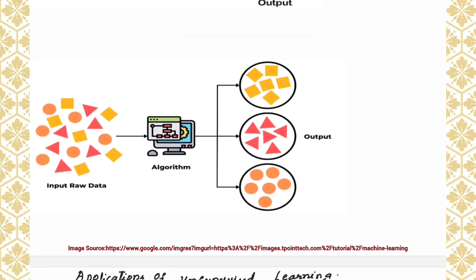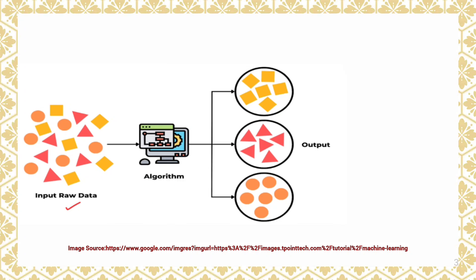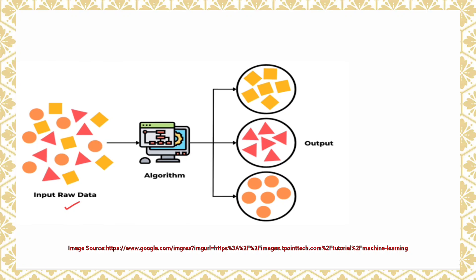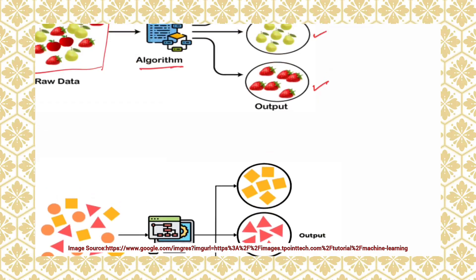Here is another example. The input raw data consists of different symbols — square, triangle, and circle. The algorithm gets trained with this unlabeled data, and when you give new data, it will try to put objects with the same features in one cluster. Three clusters are generated from this model.